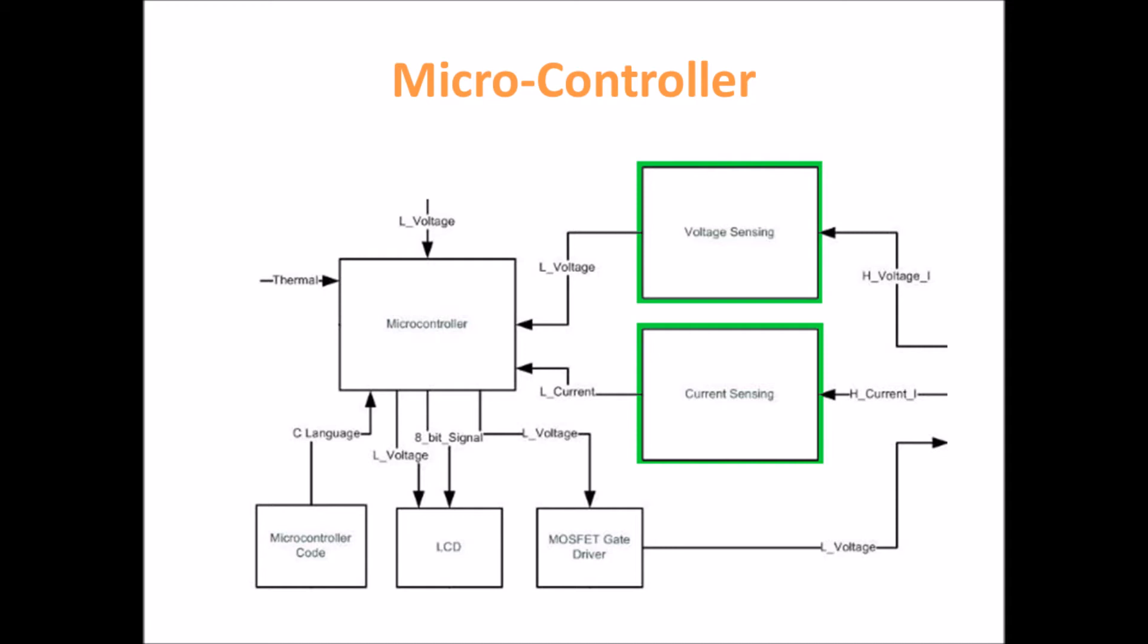Our microcontroller interfaces with the current and voltage sensors through its inputs to obtain the necessary data via voltage measurements that are read by an analog to digital converter. After some conversions using our C code, the microcontroller will send a signal to the boost circuit to either increase or decrease the output voltage depending on the location of the maximum power point. The code also outputs sensor data to the LCD where users can view the data through the LCD's button interface.